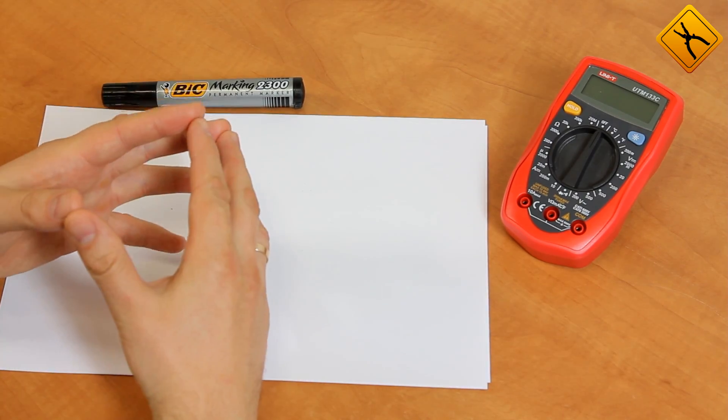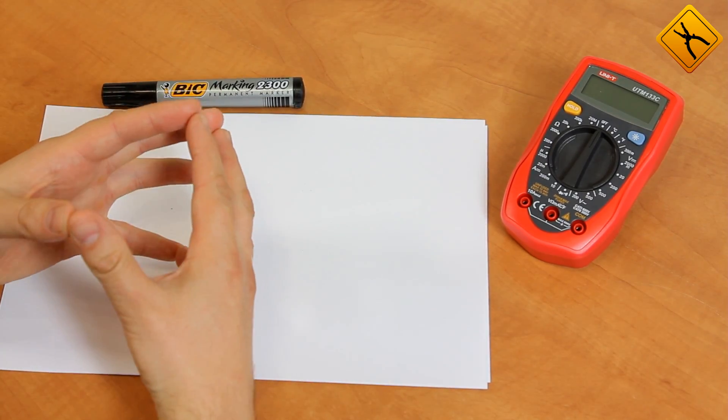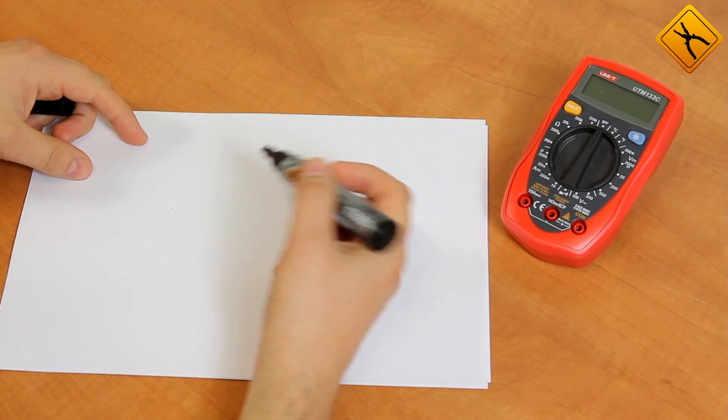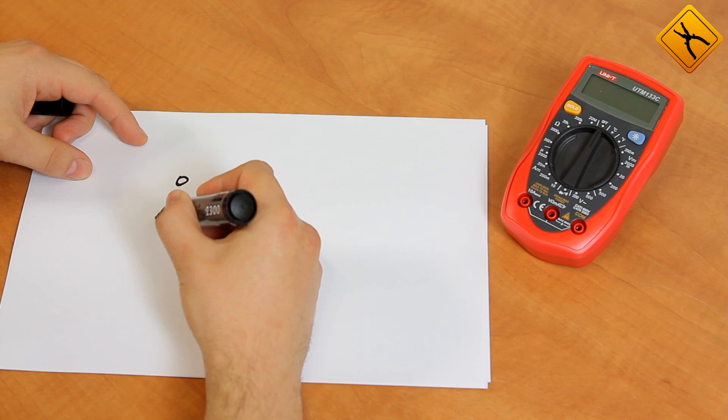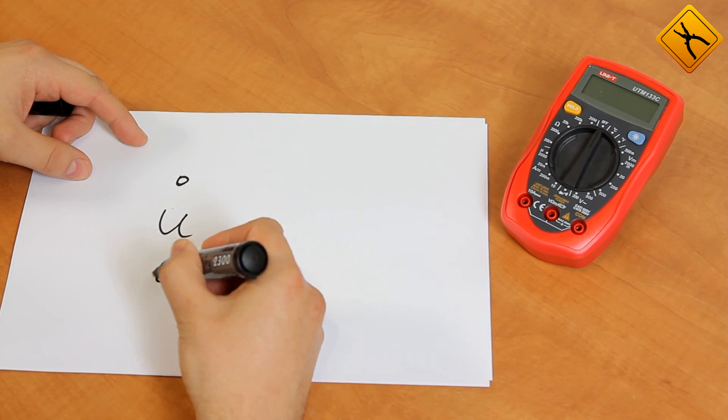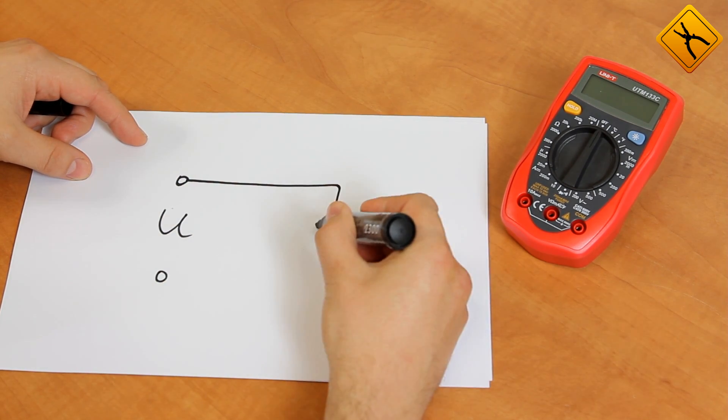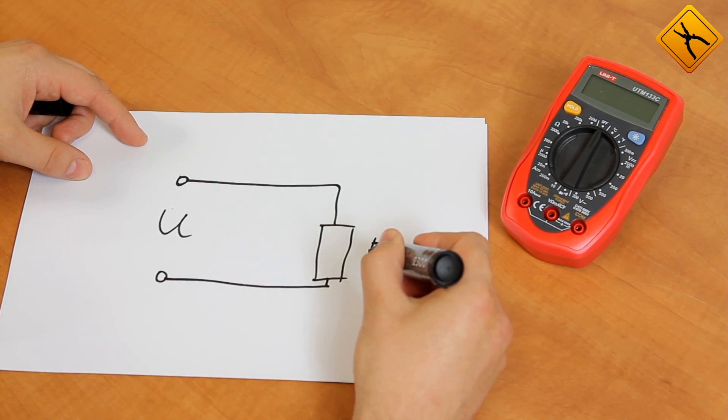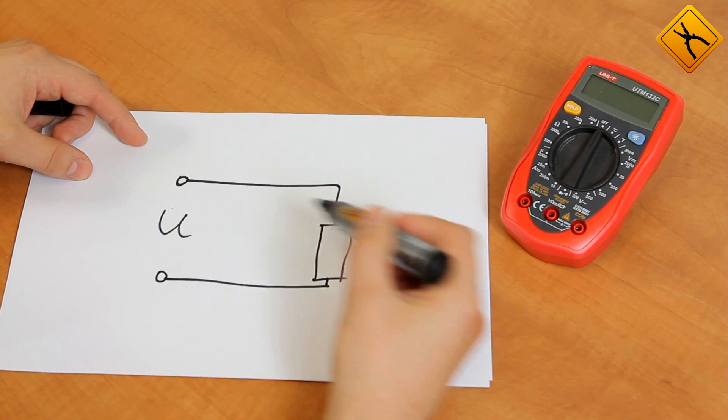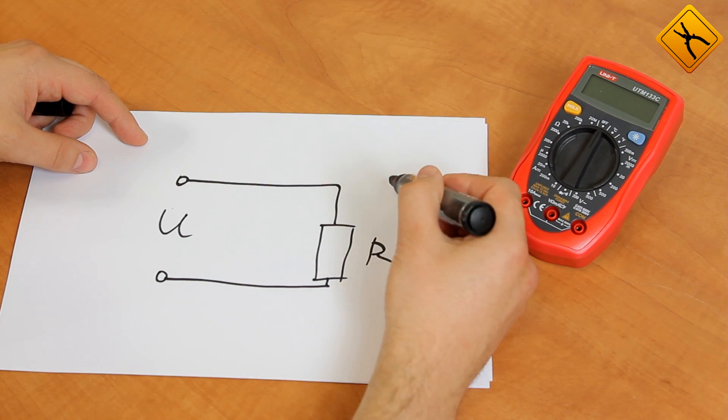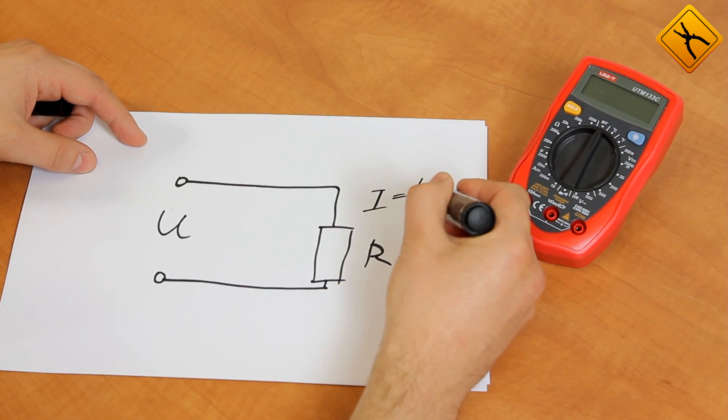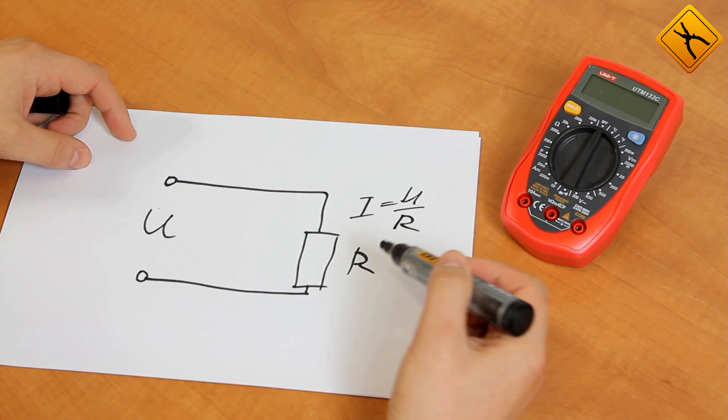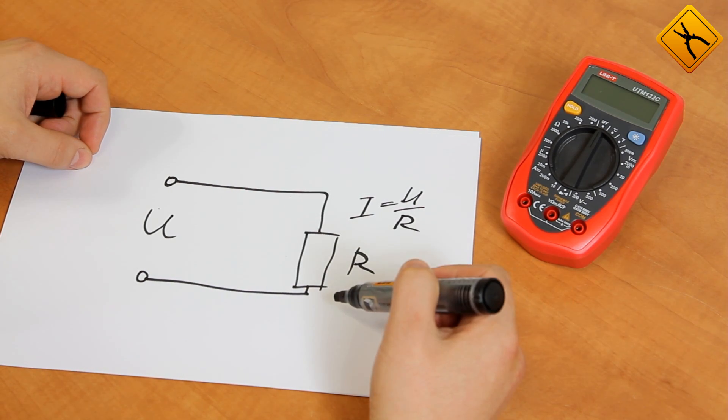The correct probe connection is very important during the measurement process. Now, I'll try to explain why. For example, we have an electric circuit. It has an input voltage U and a resistance R. This circuit will have a current due to the voltage provided: I equals U divided by R.